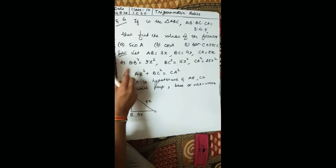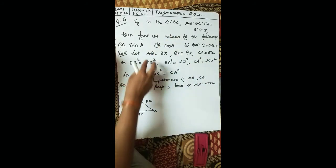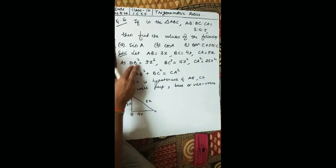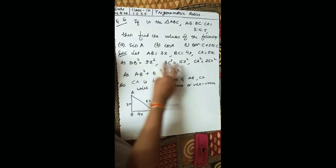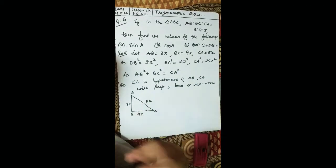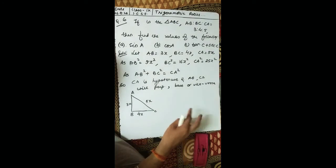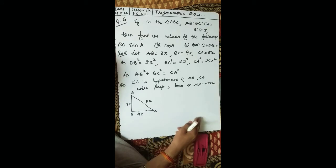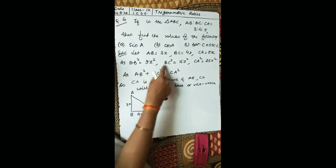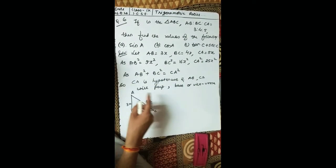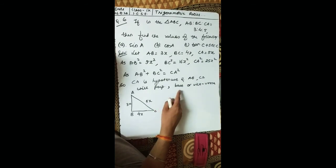Note: we write AB squared, not A squared times B squared — AB is a side label. Now checking via the Pythagorean theorem: 9x squared plus 16x squared equals 25x squared, so AB squared plus BC squared equals CA squared. This confirms it is a right-angled triangle and CA is the hypotenuse, while AB and BC are the perpendicular and base.